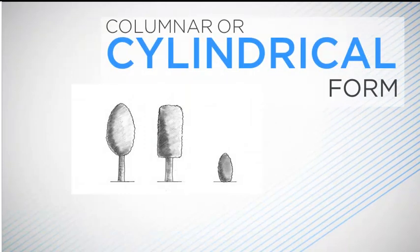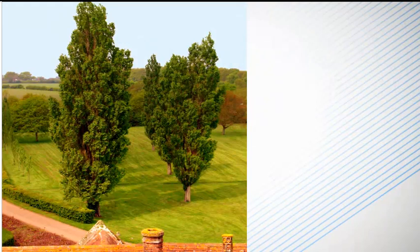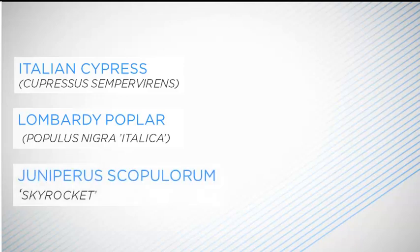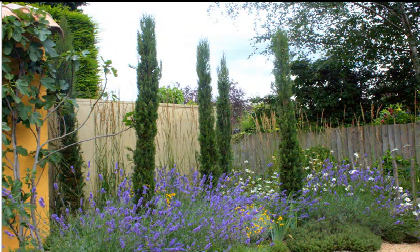Columnar or cylindrical forms are found in trees and shrubs that have a fastigiate habit, when all the branches ascend and make the shape of an exclamation mark. Examples of trees are the Italian cypress, Cupressus sempervirens, the Lombardy poplar, Populus nigra italica, and Juniperus scopulorum 'Skyrocket'. Columnar form is a strong shape that demands attention. It can be used as a focal point, but can also be an eyesore if wrongly placed. It becomes less dramatic and more stable if used as a group of three or five plants within a planting scheme.